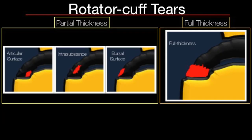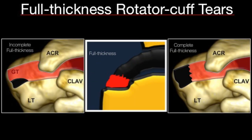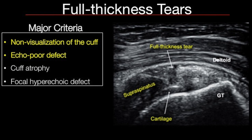Multiple criteria have been described in literature to aid in the diagnosis of full thickness tears. The major criteria seen in day-to-day practice include: non-visualization of the cuff, an echopoor defect in the continuity of the cuff, cuff atrophy, and sometimes a focal hyperechoic defect — though this is mainly seen in acute tears. On long axis, discontinuity of fibers with a clear break between the articular and bursal surfaces confirms a full thickness tear.